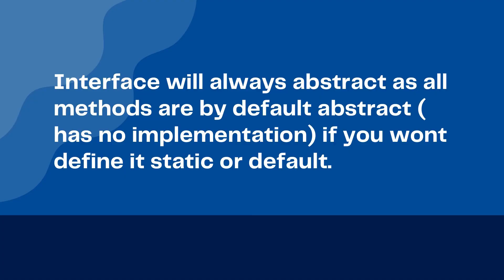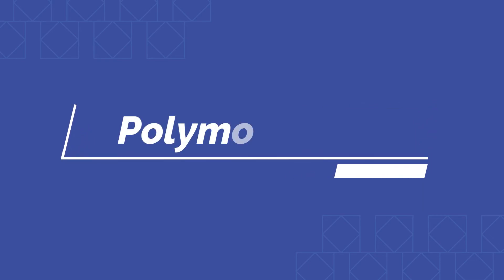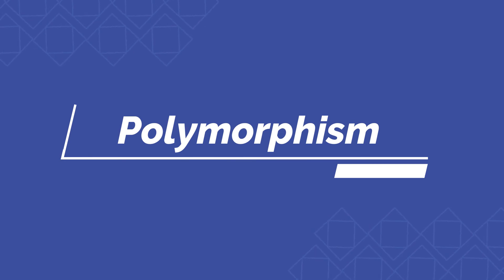Poly means many and morphism means form. Let's take an example: I am a YouTuber, I'm a software professional, and I am a daughter, I'm a sister. So there are multiple forms of me. So this is how I can define polymorphism.